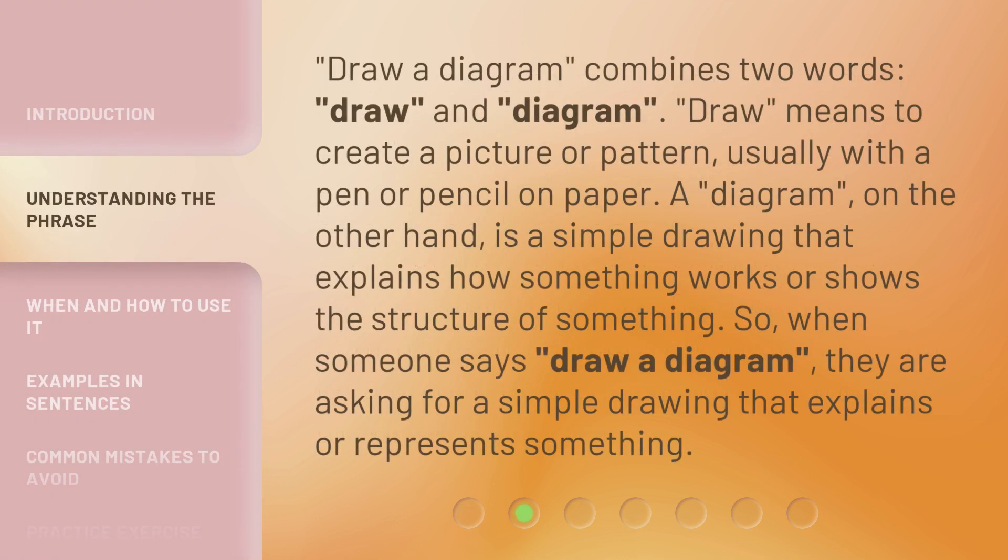Draw a diagram combines two words: draw and diagram. Draw means to create a picture or pattern, usually with a pen or pencil on paper. A diagram, on the other hand, is a simple drawing that explains how something works or shows the structure of something. So, when someone says 'draw a diagram', they are asking for a simple drawing that explains or represents something.